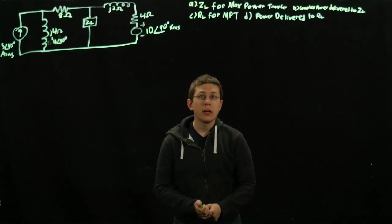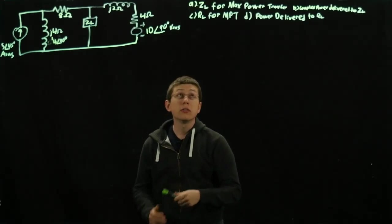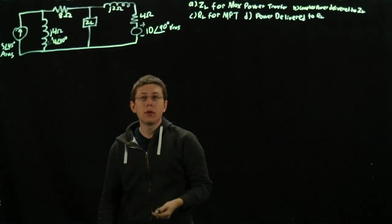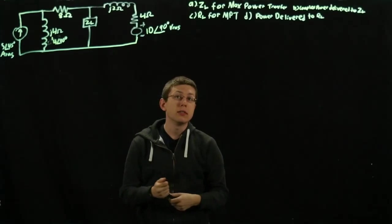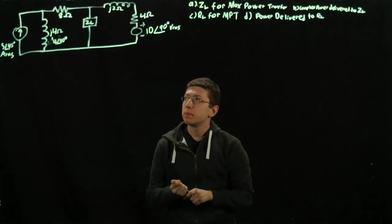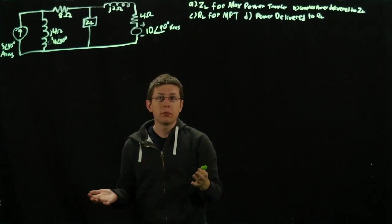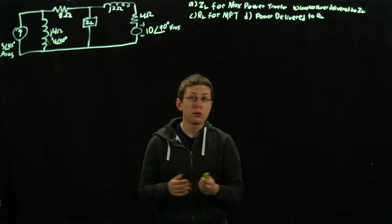Hi, this is Dan from UConn HKN and today we are doing an AC maximum power transfer problem. We're going to find an impedance ZL for maximum power transfer in this circuit and then find the complex power sent to that impedance. Then we're going to replace ZL with RL, a purely resistive load, and find the power delivered to that for maximum power transfer.